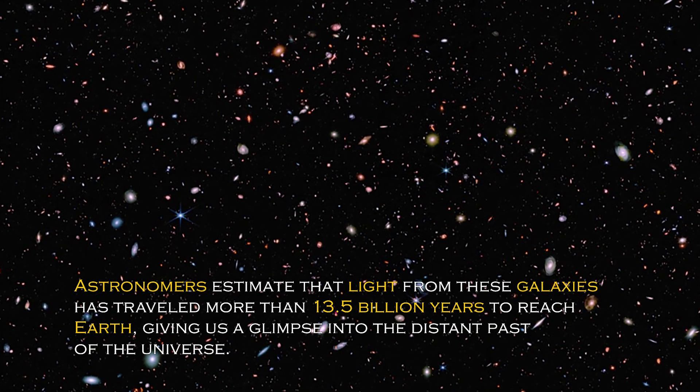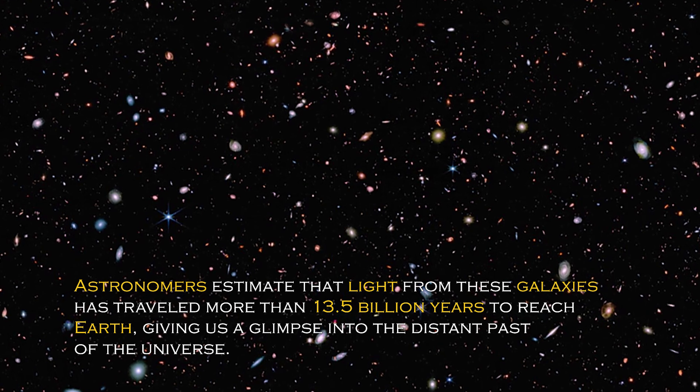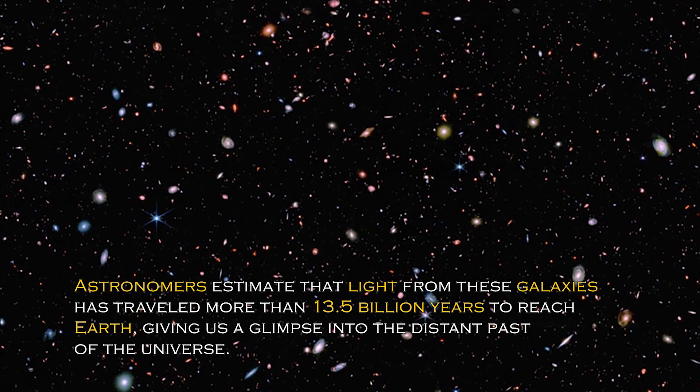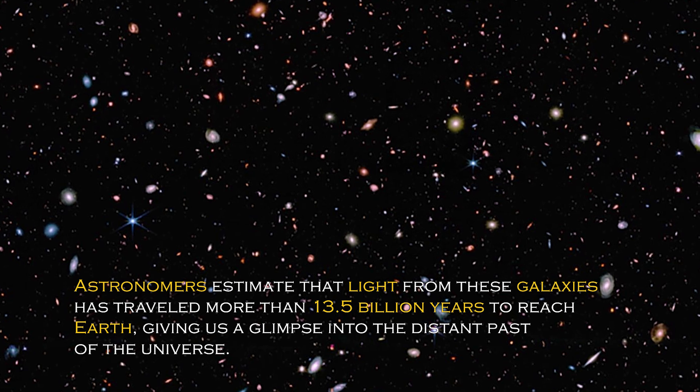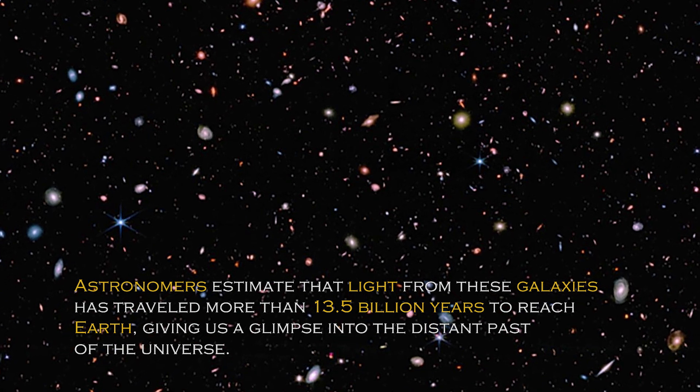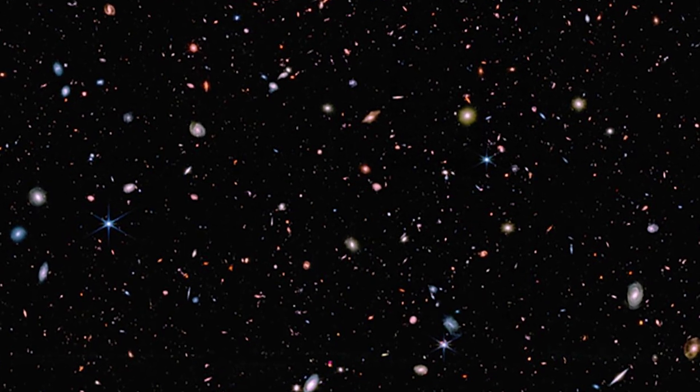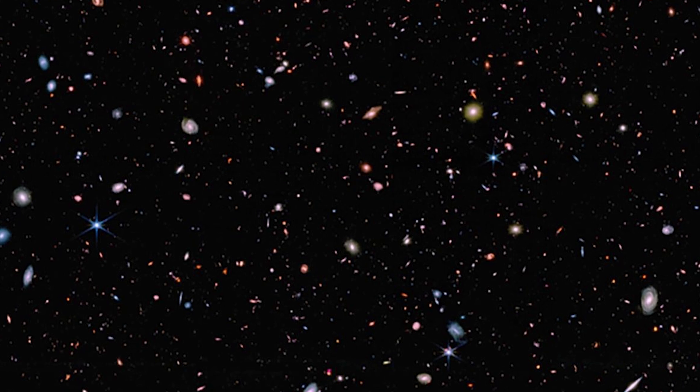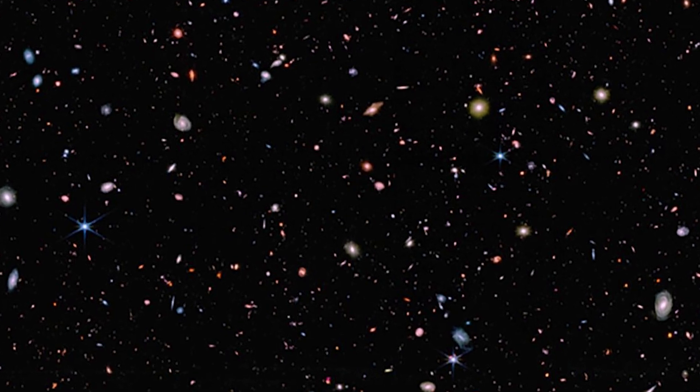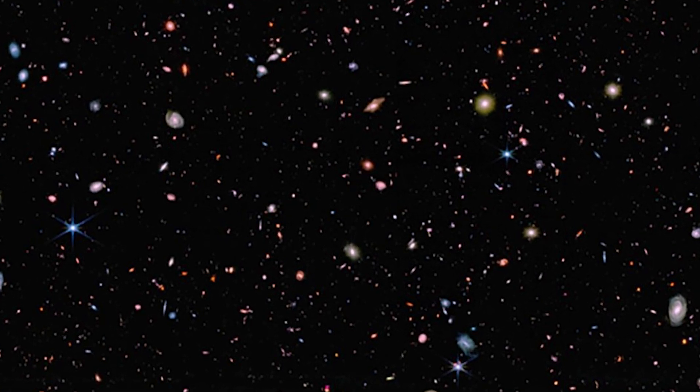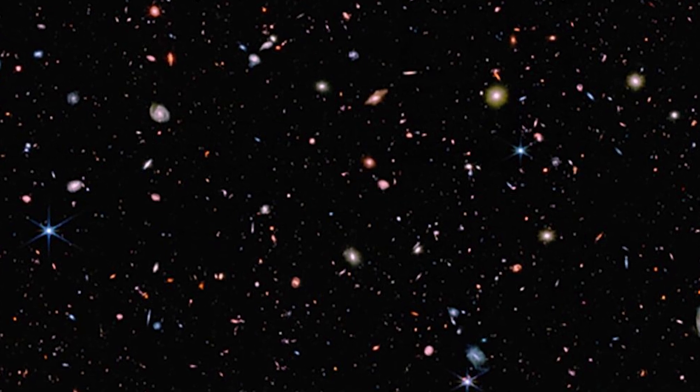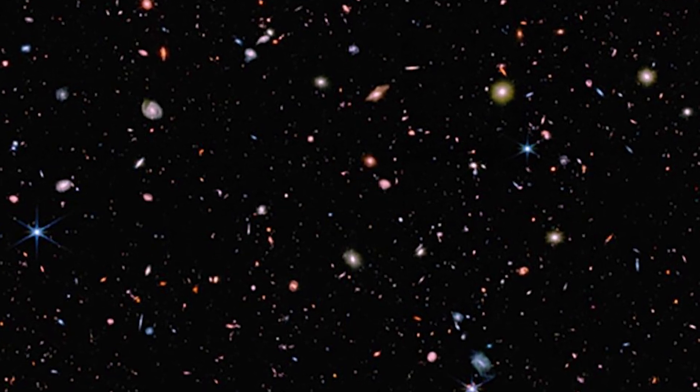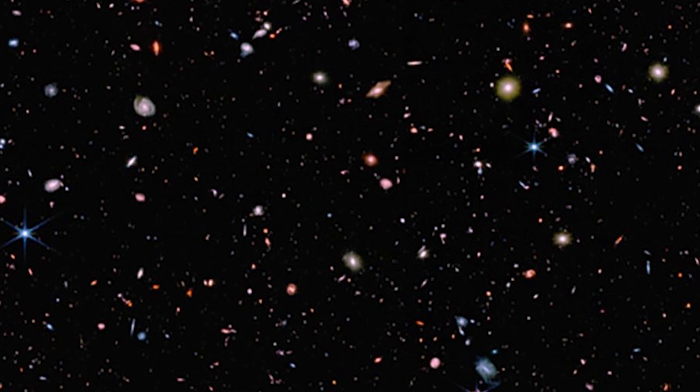Astronomers estimate that light from these galaxies has traveled more than 13.5 billion years to reach Earth, giving us a glimpse into the distant past of the universe. These galaxies were discovered when the universe was young, which sheds light on how quickly the first generations of galaxies emerged. The spectral data confirmed that these galaxies are at the edge of our view, some even farther away than Hubble could see.